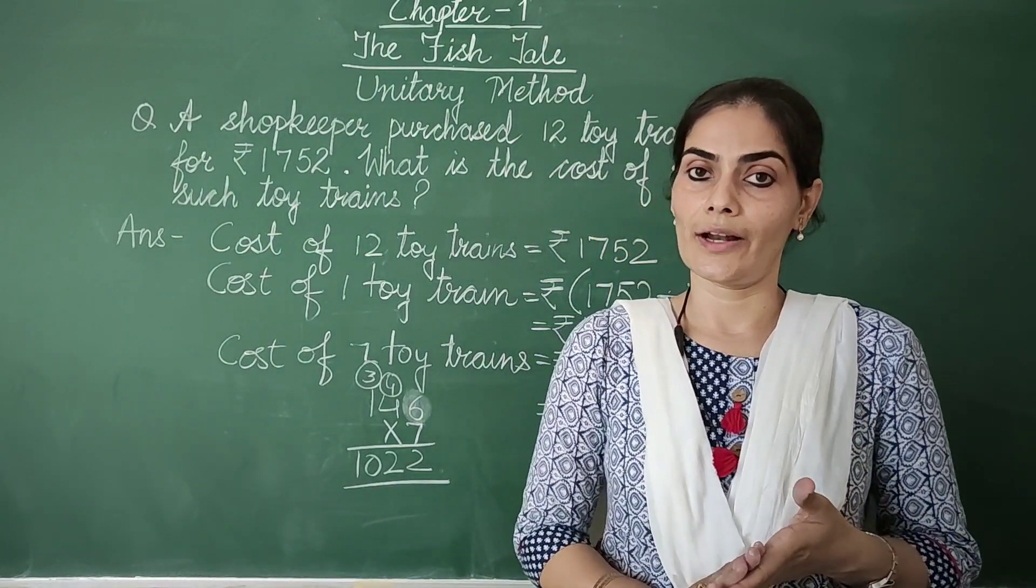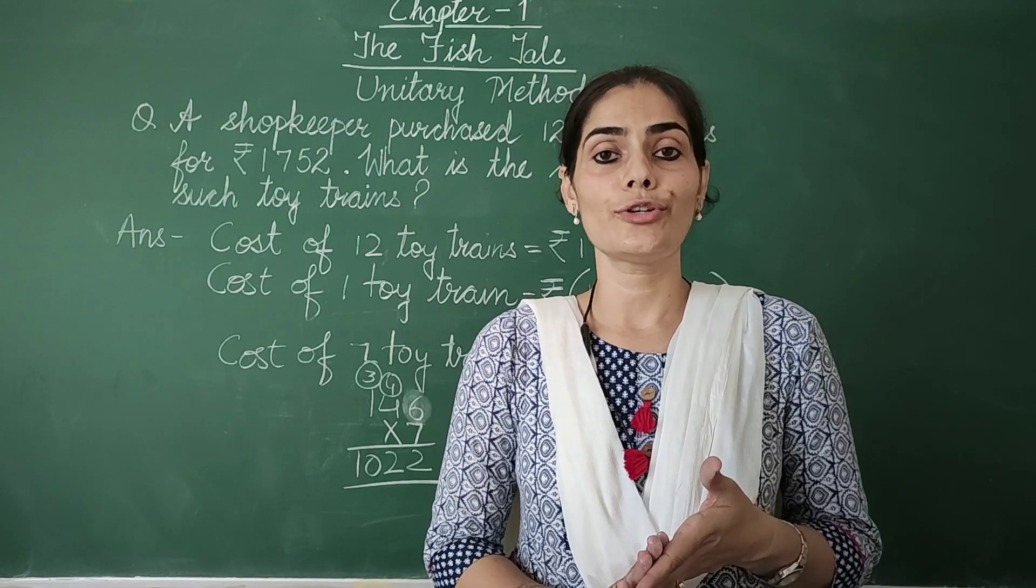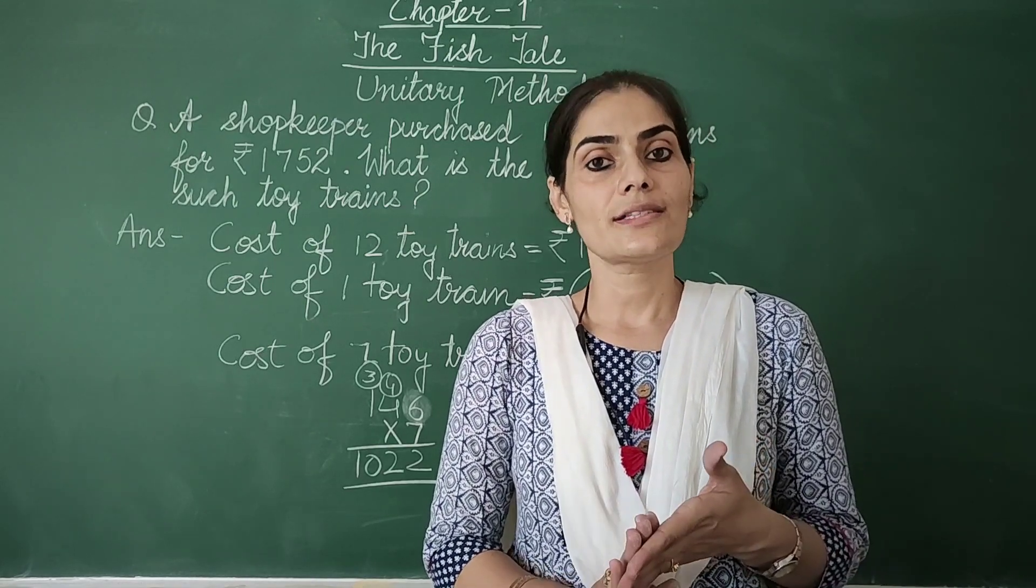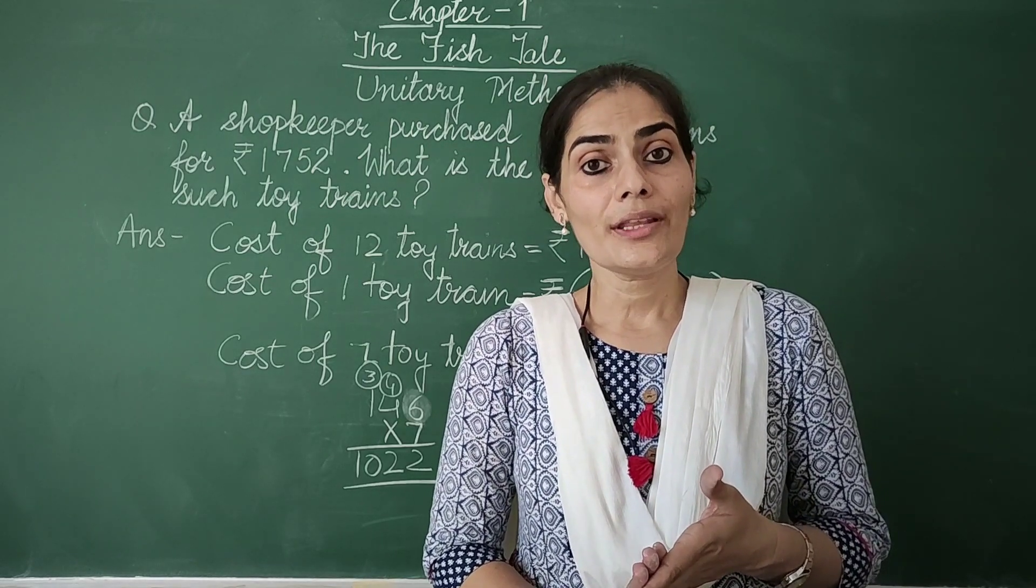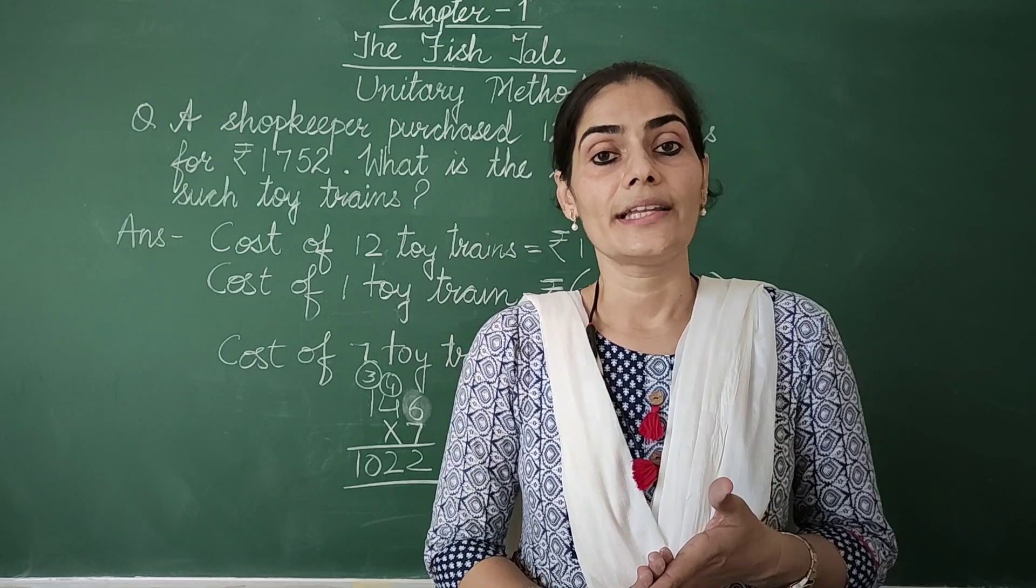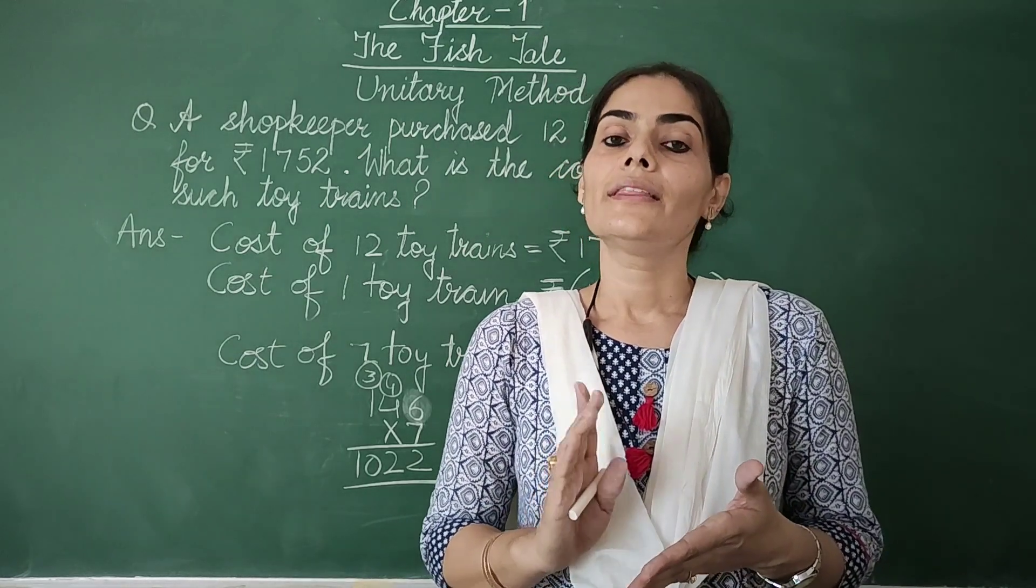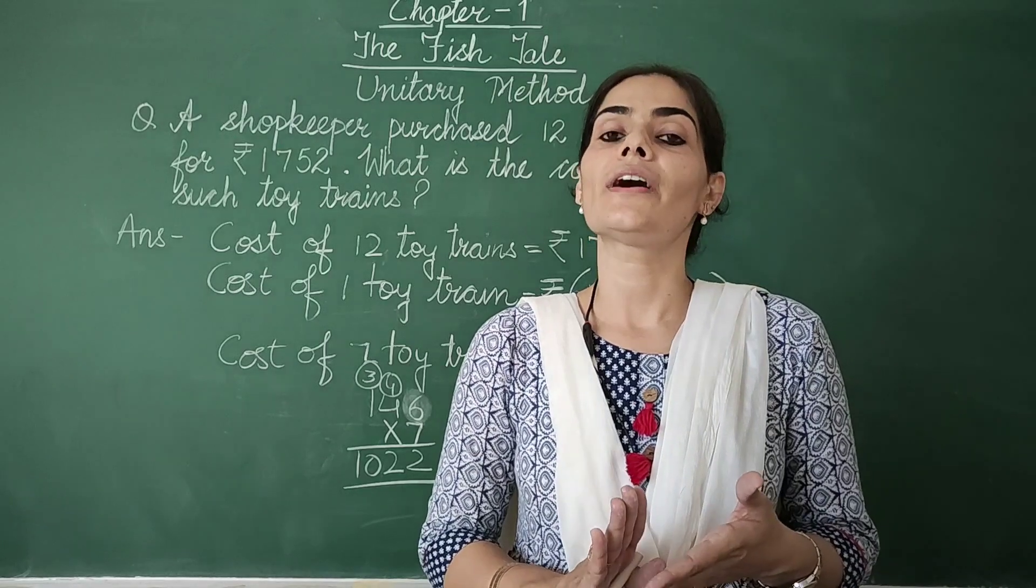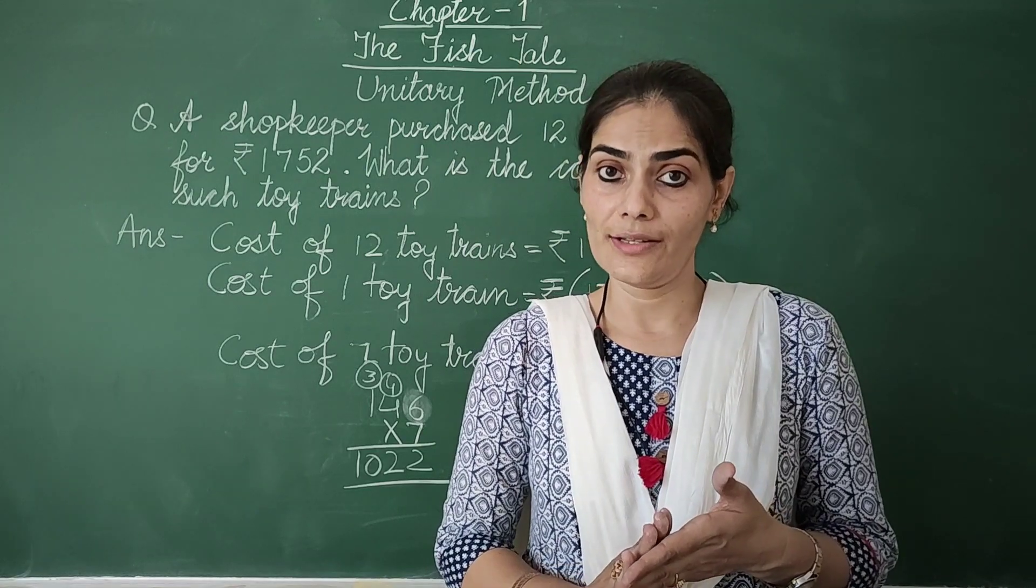I hope you all have understood. Again, let's recapitulate. What have I told you in this method? First is, what is unitary method? What do we do in this method, beta? We first find the value of 1 unit. Then with this value, we find the value of required number of units.